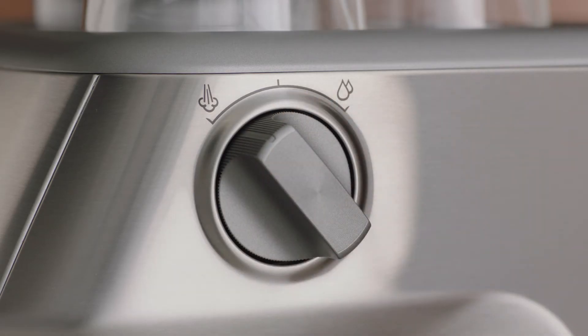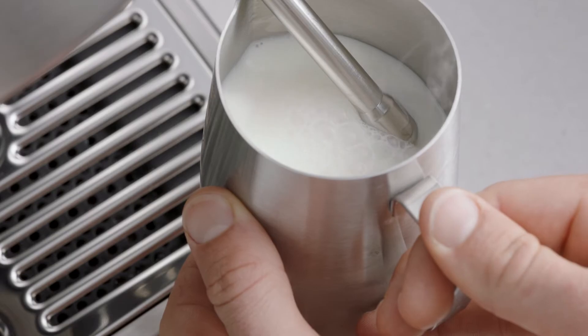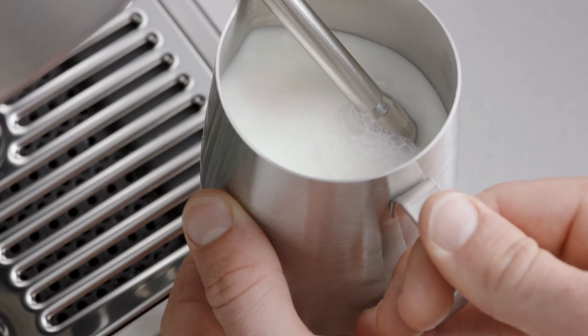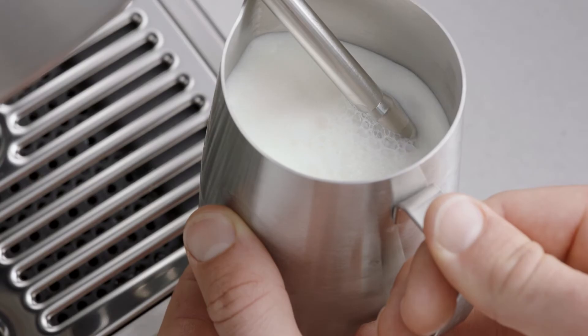Move the dial to the steam position and keep the tip of the steam wand just under the surface of the milk until the milk is spinning clockwise, producing a whirlpool effect.